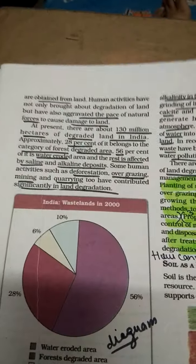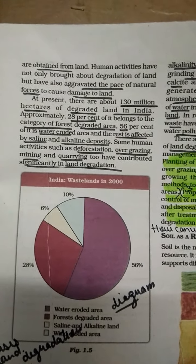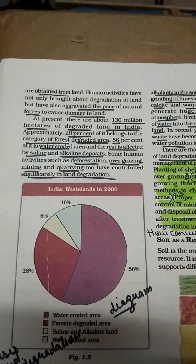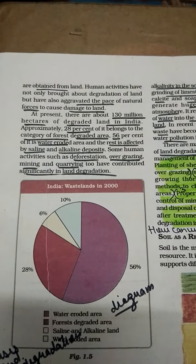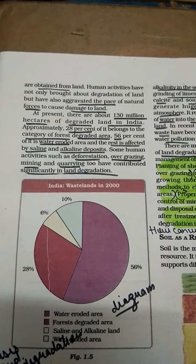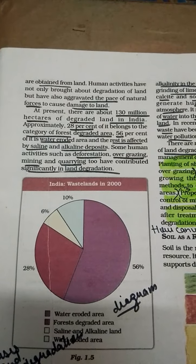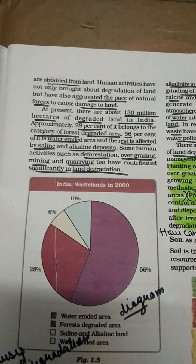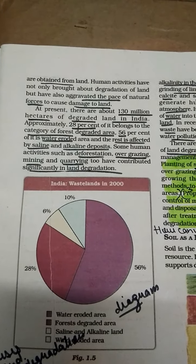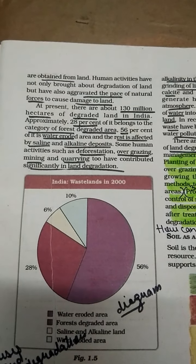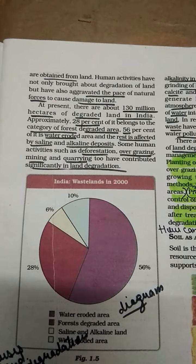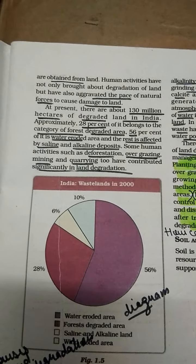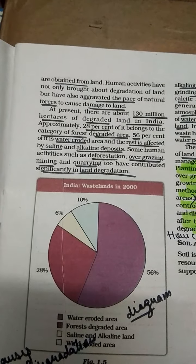Land degradation and conservation is an important topic. We need to conserve land to share it with future generations. About 95% of our basic needs — food, shelter, and clothing — are obtained from land. Human activities have not only brought about the degradation of land but have also aggravated the pace of natural forces that cause damage to land, such as installing industries and cutting down trees.